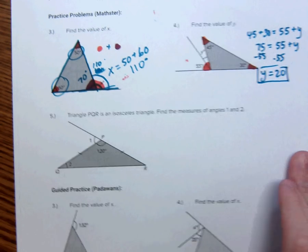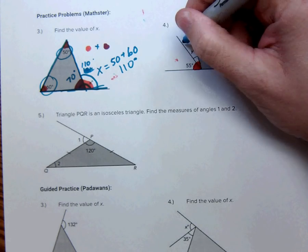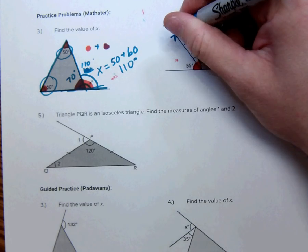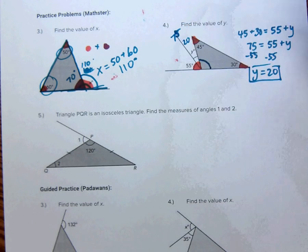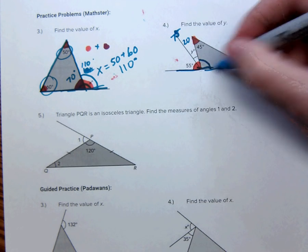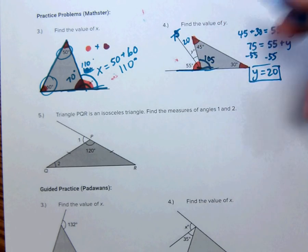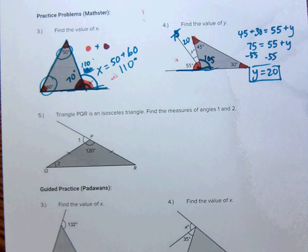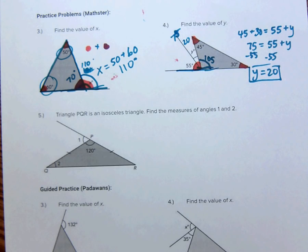And we can check ourselves. We can say, okay, 55 plus 20 is 75. And this right here has to be equal 180 degrees, as does the other two over here. So, that is 105. And 105 plus 45 makes 150. 150 plus 30 is 180. Cool. Remember, the exterior angle is the same as the other two angles combined.